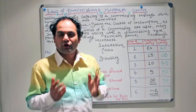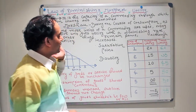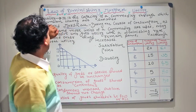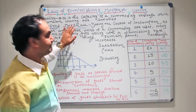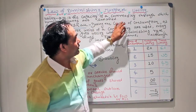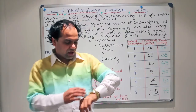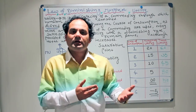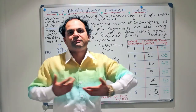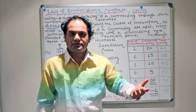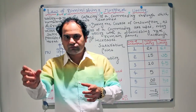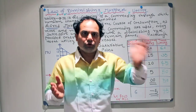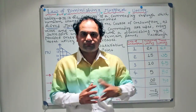Before I actually explain the Law of Diminishing Marginal Utility or DMU, you first need to know what utility is. Utility basically means it is the capacity of a commodity through which human wants are satisfied. If I am wearing this watch at this moment, it is giving me some utility. If I am wearing this shirt, that means it is giving me some utility. When you are thirsty and somebody gives you a glass of water, that particular glass of water is giving you some utility. So utility basically means anything that satisfies human wants.